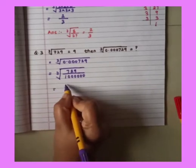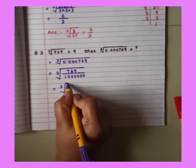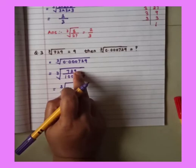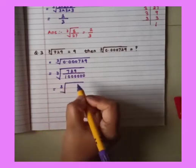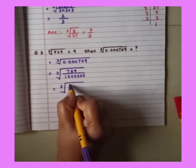Now students see here. We have already found factors. The factors for 729 is 9. Okay. No need to show here because we already found in a previous sum.